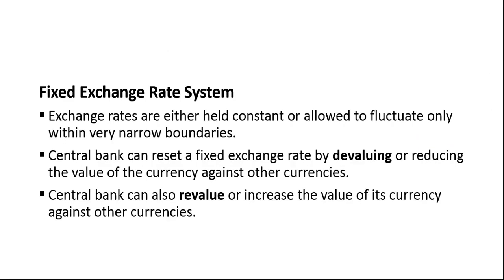In a fixed exchange rate system, exchange rates are held constant or allowed to fluctuate only within very narrow boundaries. For example, suppose we fix the dollar exchange rate at $1.25 per euro. Now you're trying to maintain that $1.25. Does that mean it can never change? Well no — the central bank can reset a fixed exchange rate by devaluing or reducing the value of the currency against other currencies. So for example, the central bank could change the dollar-euro relationship, perhaps to $1.15 for a euro.